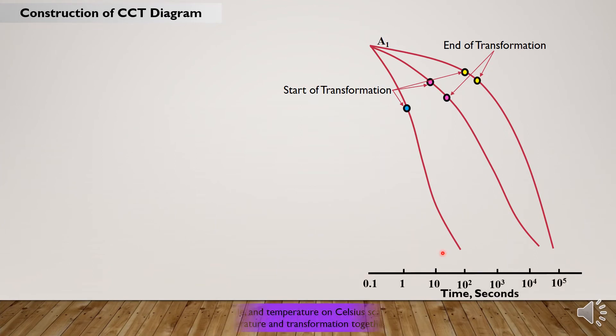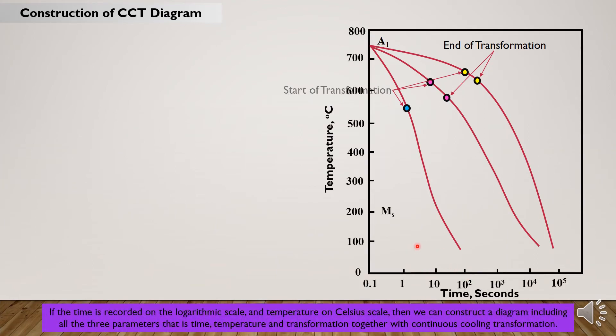If the time is recorded on the logarithmic scale and temperature on Celsius scale, then we can construct a diagram including all three parameters: time, temperature, and transformation, together with continuous cooling transformation, as shown in this diagram.